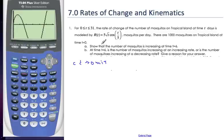Today we're going to look at rates of change. We have a problem here with mosquitoes on the island, and it says the rate of change of the number of mosquitoes is given by this equation here.